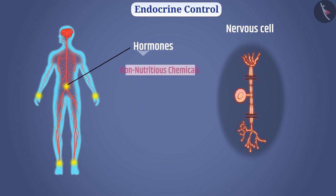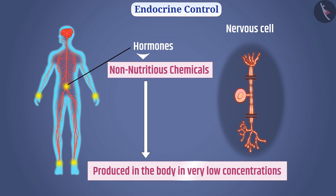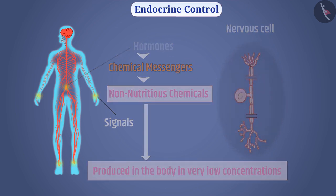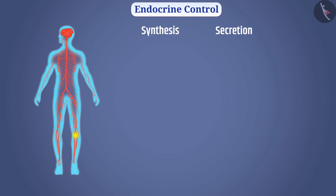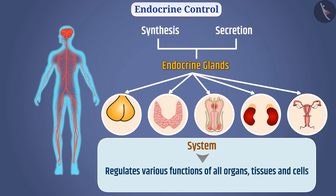Hormones are non-nutritious chemicals produced in the body in very low concentrations. They are used to carry signals to various cells of the body, and therefore hormones are called chemical messengers. Synthesis and secretion of hormones in animals is done by the endocrine glands. The mechanism that regulates various functions of all organs, tissues, and cells of the body by the secretion of hormones is called the endocrine system.